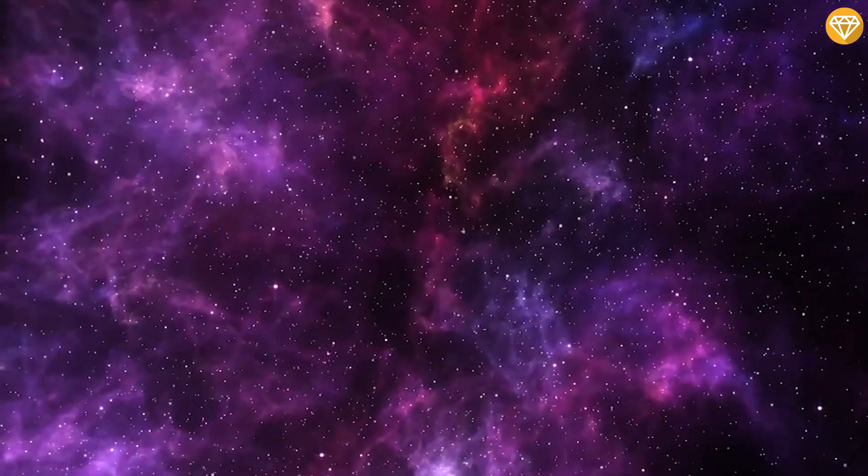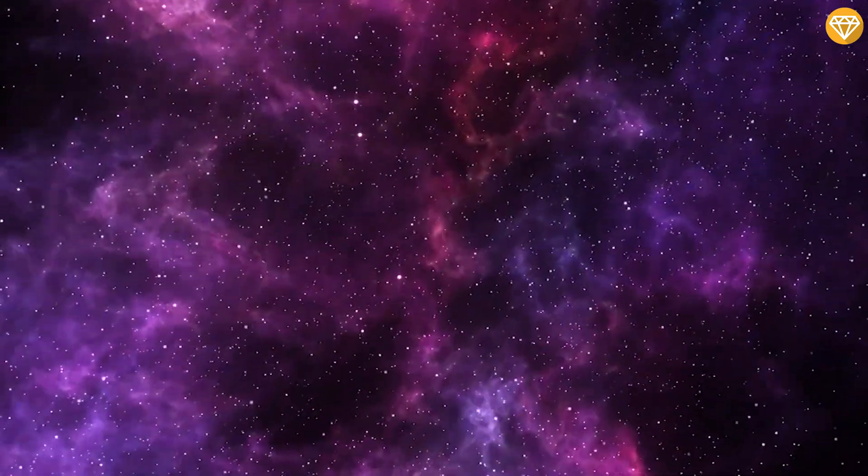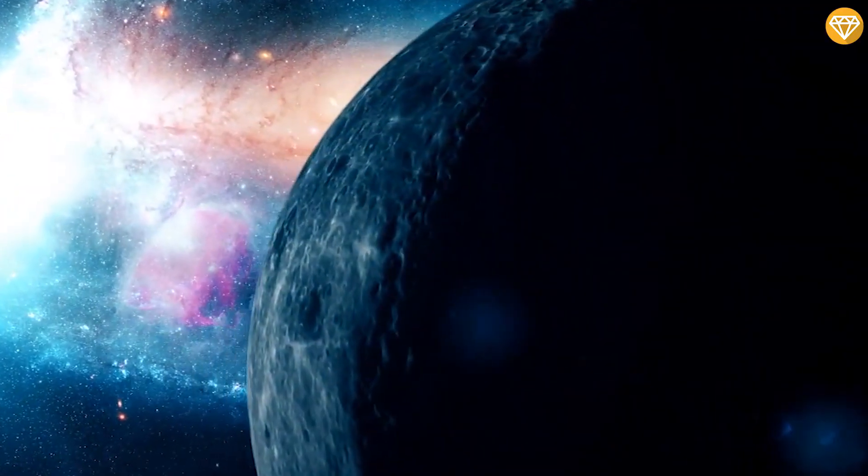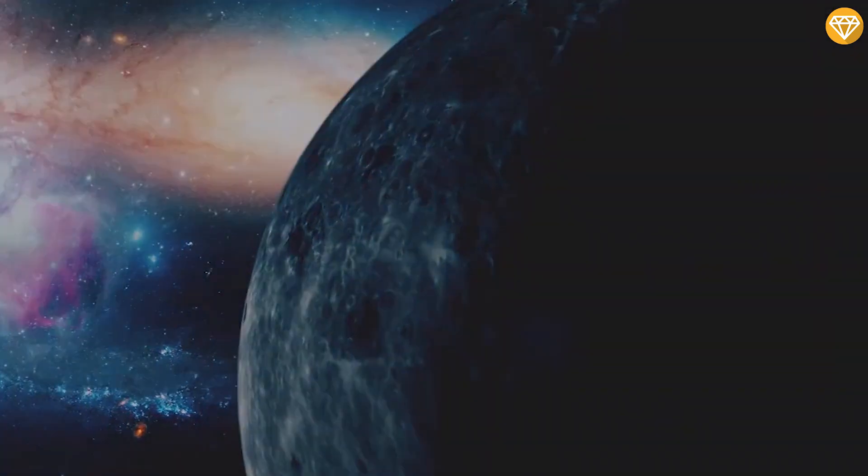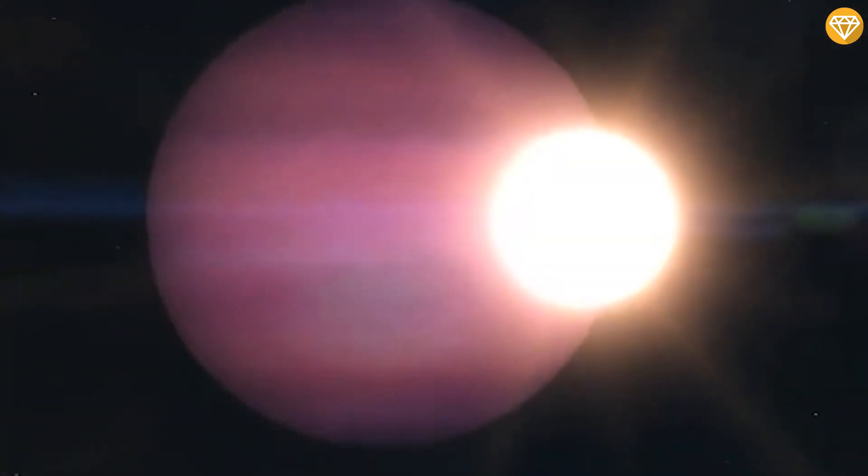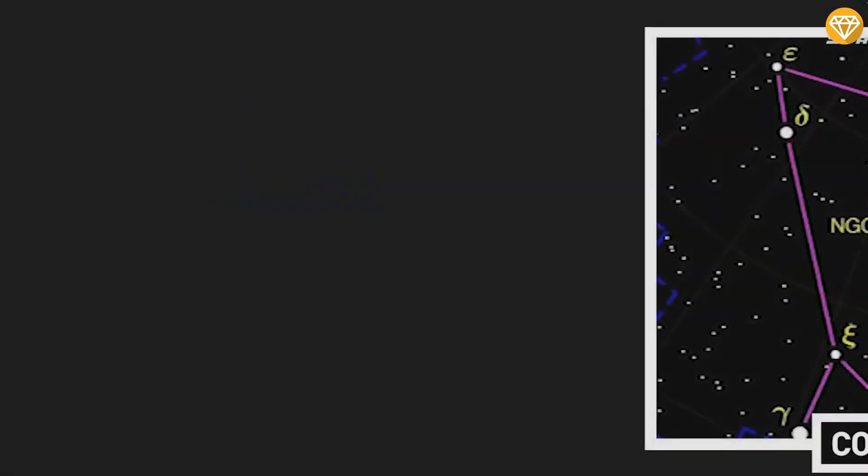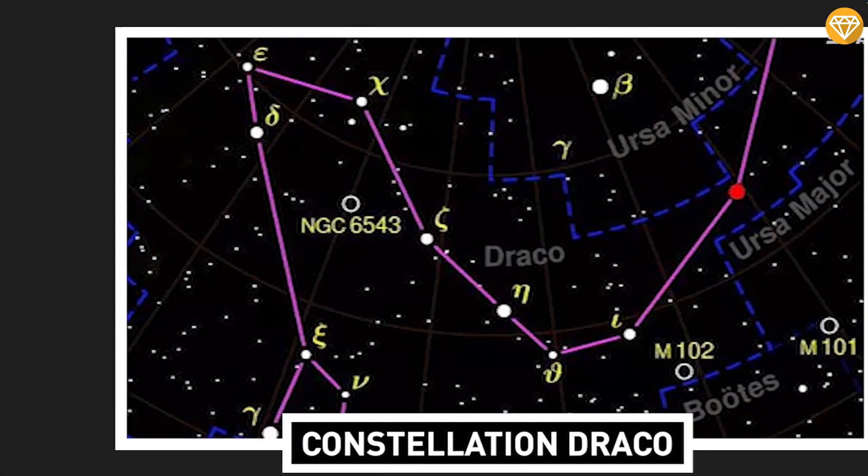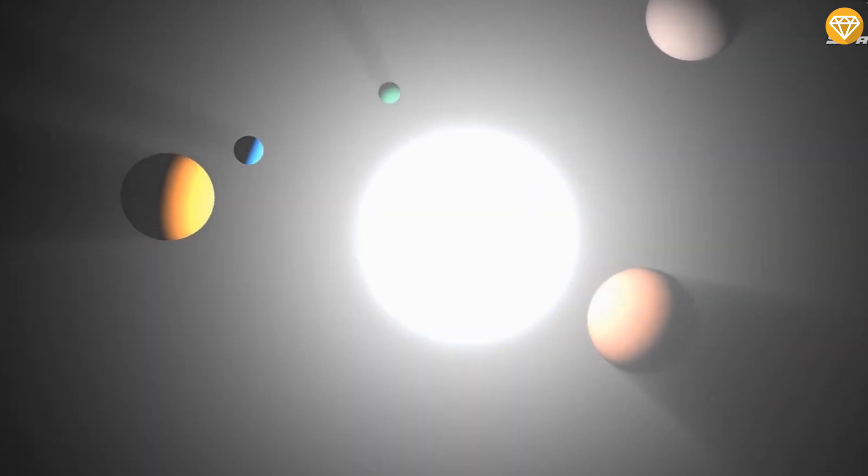In this system would have been WD 1856 b. Somehow the planet, seven times larger than the dwarf star, got extremely close and managed to stay in one piece. WD 1856 b resides in the constellation of Draco and is 80 light years, or 25 parsecs, from Earth.